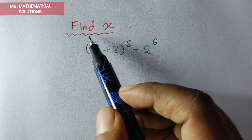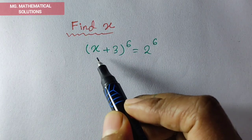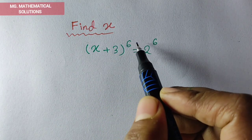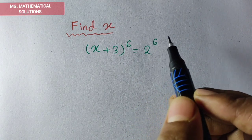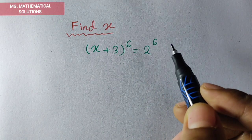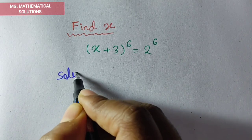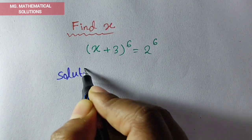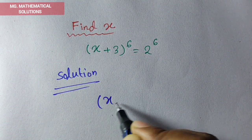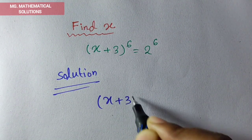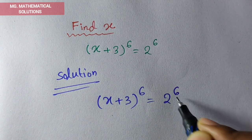Today's question is: find x of the equation (x + 3) to the power 6 equal to 2 to the power 6. Let's see how to solve. (x + 3)^6 = 2^6.